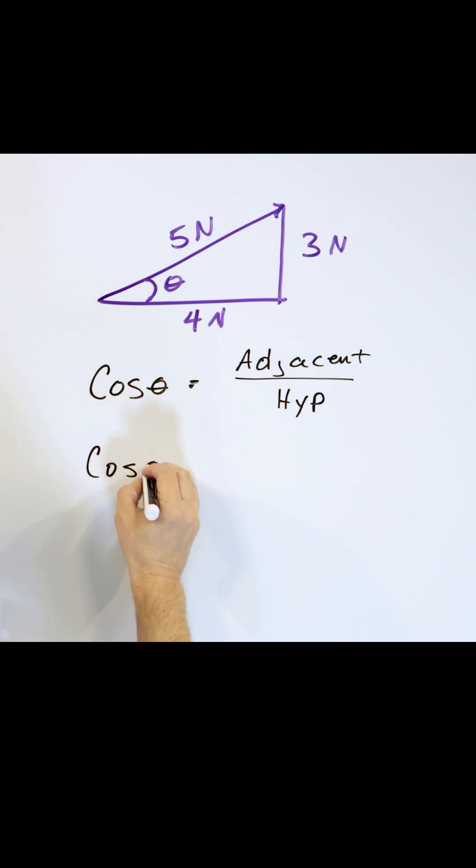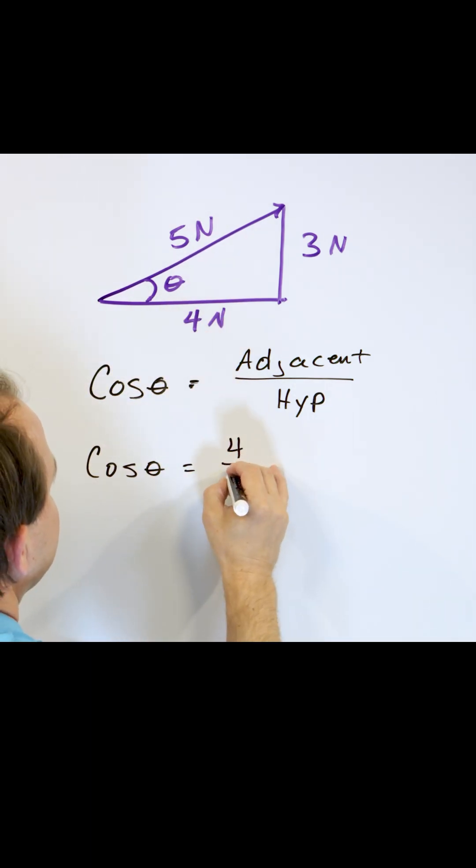So the cosine of this angle, whatever this angle is, is four divided by five.